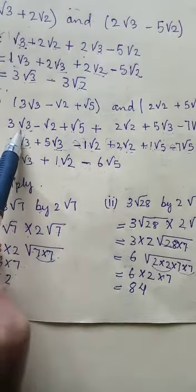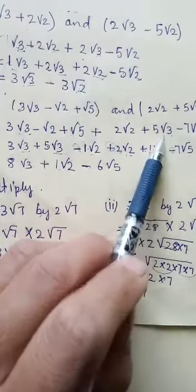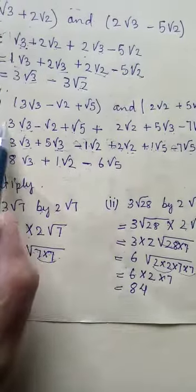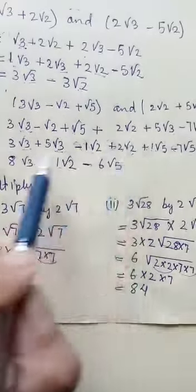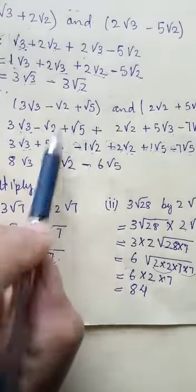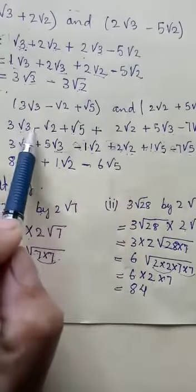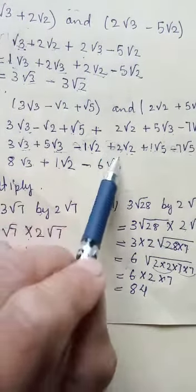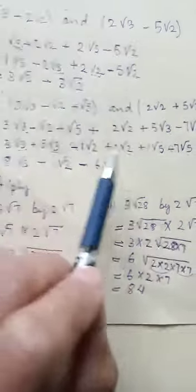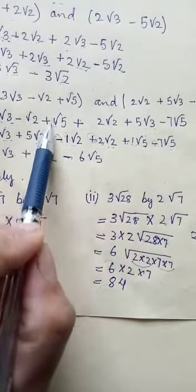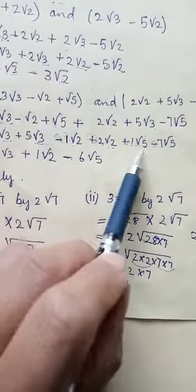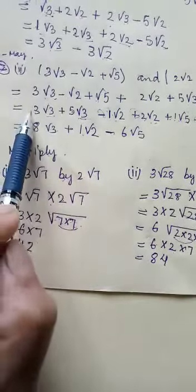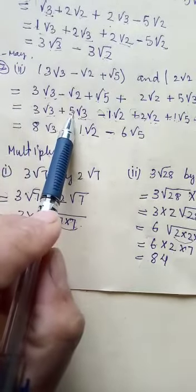Let us arrange them — those which are like radicals we put together. Here we have root 3, there also root 3, so we arrange them. Here we have plus, there also plus. Here we have square root 2, here also square root 2 — write them together. No number here means there is 1. Then we have 2, sign is plus, then plus, no sign means 1.